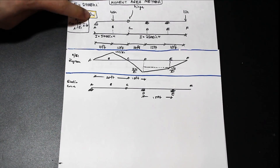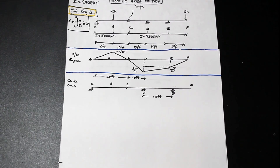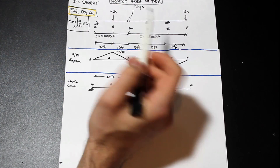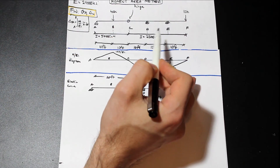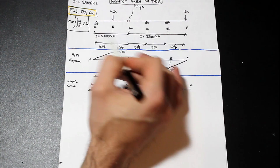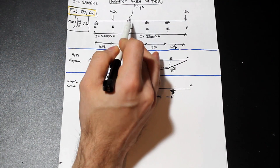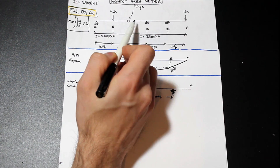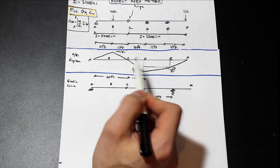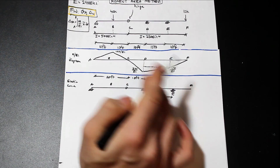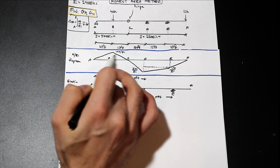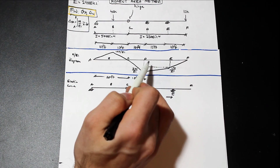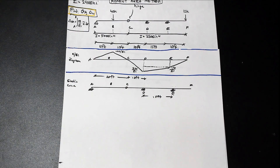We are asked to find θA and δC. We have the modulus, and I left this formula here from the last question. If you don't understand what this formula is, go back — I'll explain it a little bit but I'm not going to go over it too much. We have this beam with two different I values and a hinge. We have the M/EI diagram — it's the moment diagram divided by EI. The trick here is that for this portion you need to divide by 2I, giving you 100 over EI. I suggest trying to draw that on your own first.